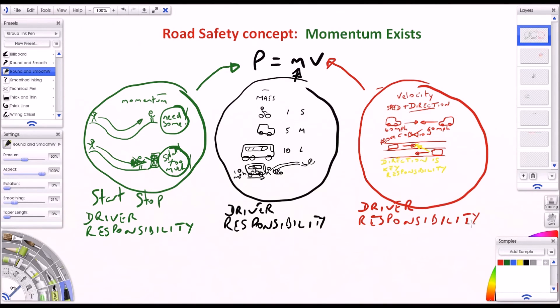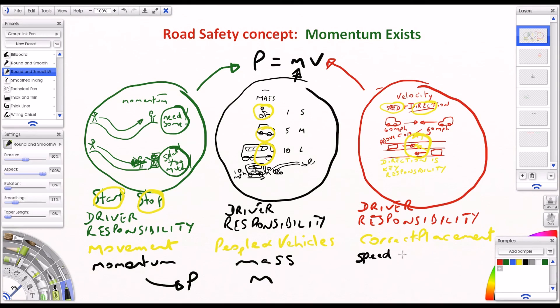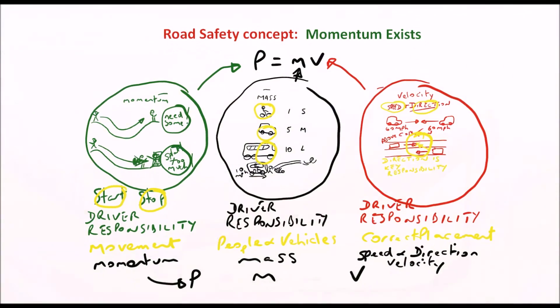If we summarize that, we've got a start and stop which is the movement, driver responsibility. For the mass, people and vehicles, driver responsibility. And velocity, speed and direction, which is correct placement of the vehicle, that's driver responsibility. So that gives us the momentum, mass, and speed and direction which is the velocity. It gives us P equals MV.